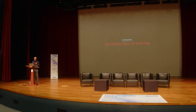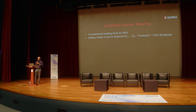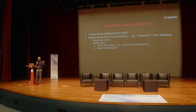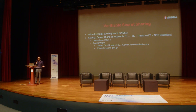Verifiable secret sharing can be a fundamental building block for this type of DKG. In VSS, we assume there is a dealer and N recipients, in the threshold setting of honest majority, and we assume a broadcast channel. The dealer has an input S, and after execution, each recipient R_i gets their share S_i — a T-of-N sharing of S. It's almost like DKG, but the problem is that the dealer has knowledge of the secret. So we build on this to construct DKG, but VSS is a very fundamental building block.